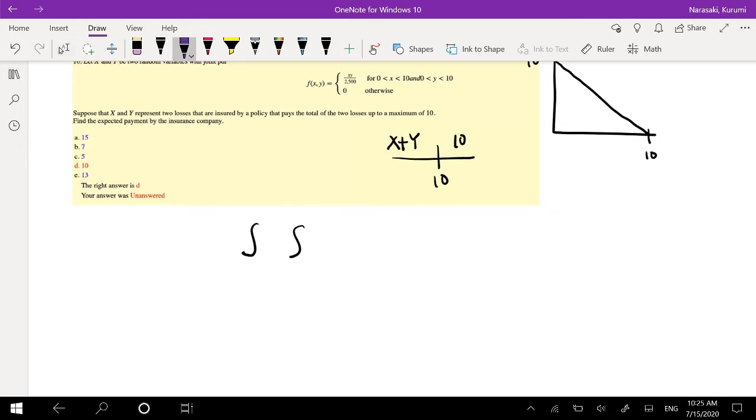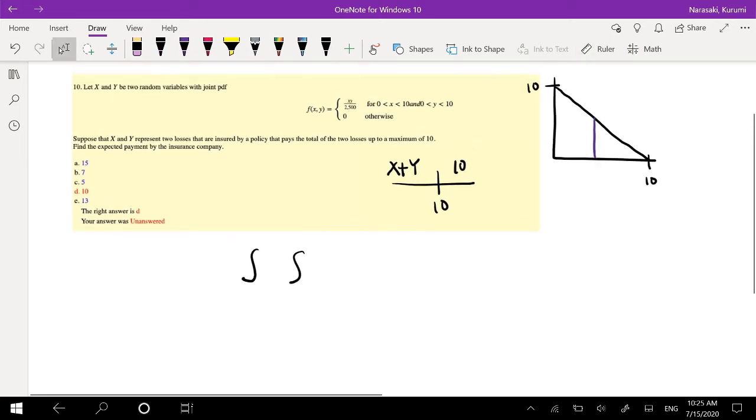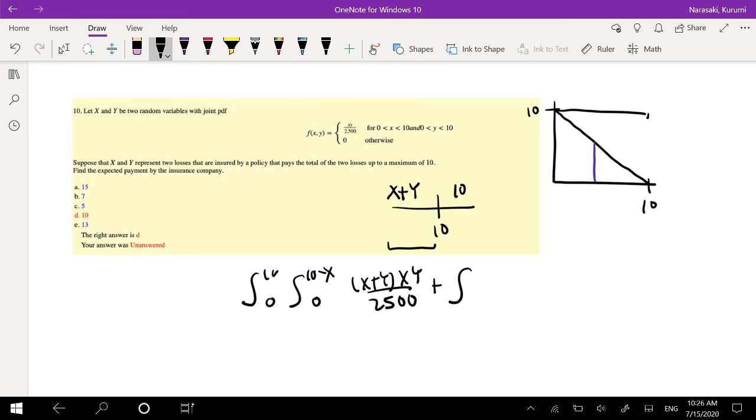Okay, find the expected payment of the insurance company. So, this basically says X plus Y has to be less than or equal to 10. So, it's going to be this region below 10. Okay, so if I integrate in respect to Y first, right, then my top bound is going to be 10 minus X. My lower bound is going to be 0, and this is going to be from 0 to 10. My X is going from 0 to 10, right? So, that's going to be my bounds if I integrate the first part. So, this is going to be X plus Y. That's my expected value, XY over 2500. So, plus, the second bound is, I mean, X is still going to go 0 to 10, but now we're looking at this area right here, where X plus Y is greater than 10.